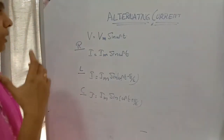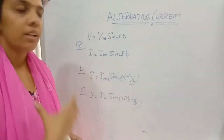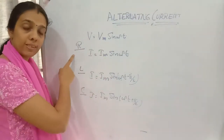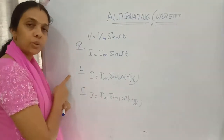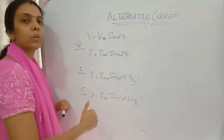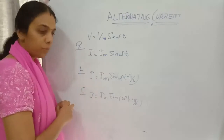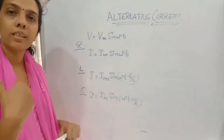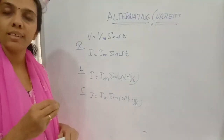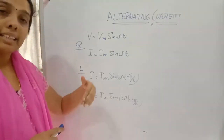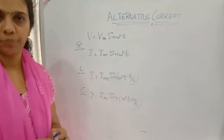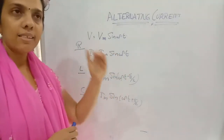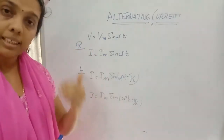In short: voltage and current will be in phase with each other for a resistive circuit; in an inductive circuit, current is lagging behind the voltage by pi by 2; and if a capacitor is included in the AC circuit, current is leading the voltage by a factor pi by 2.